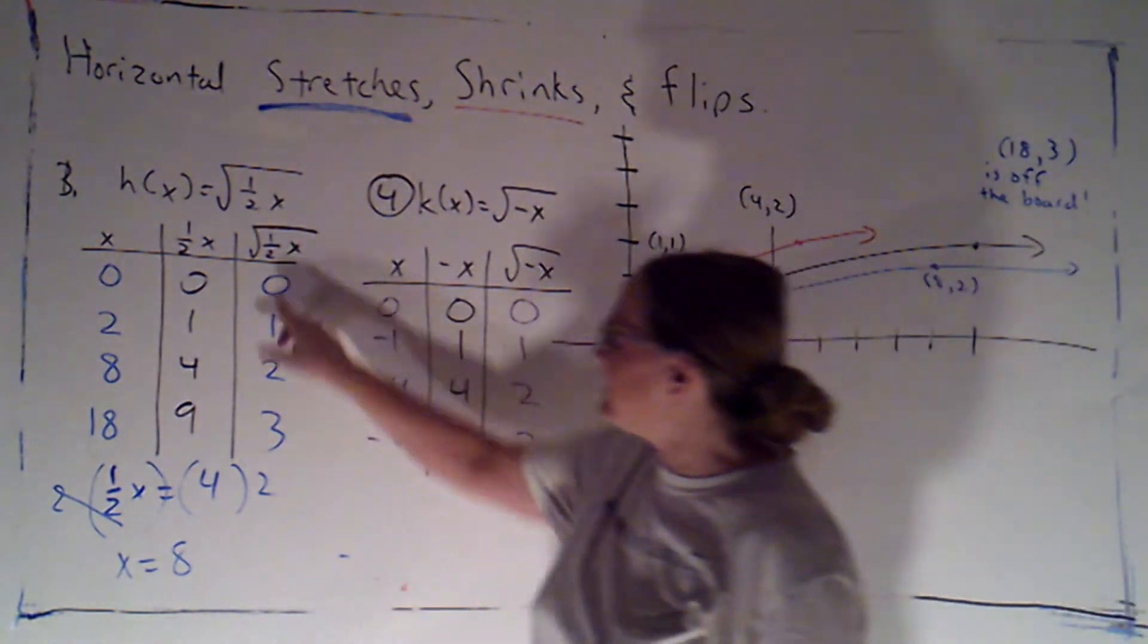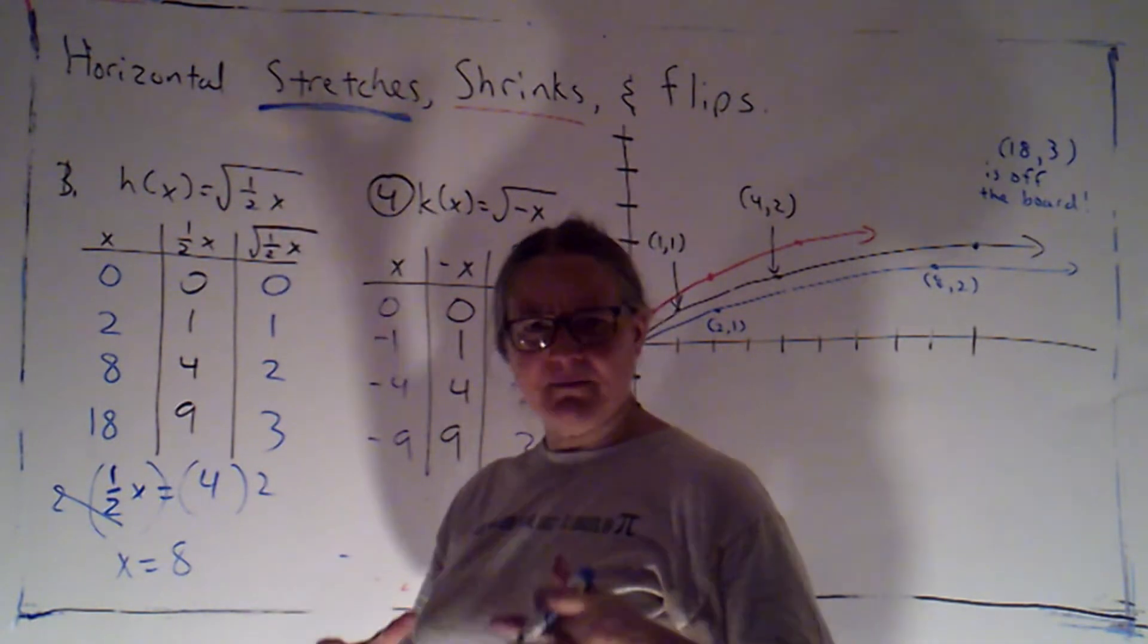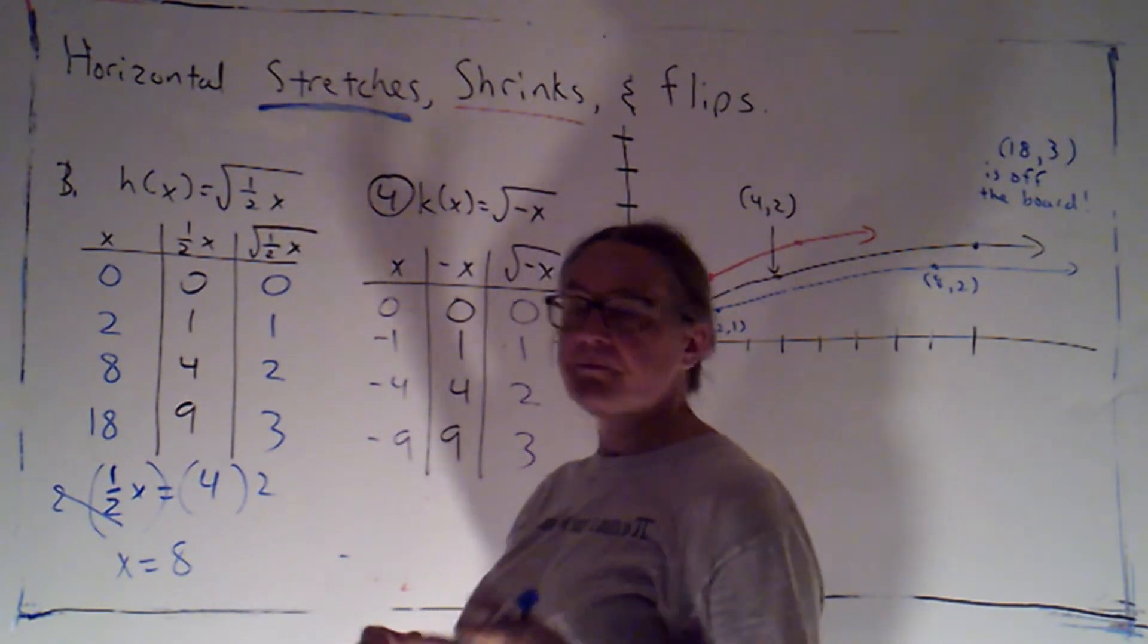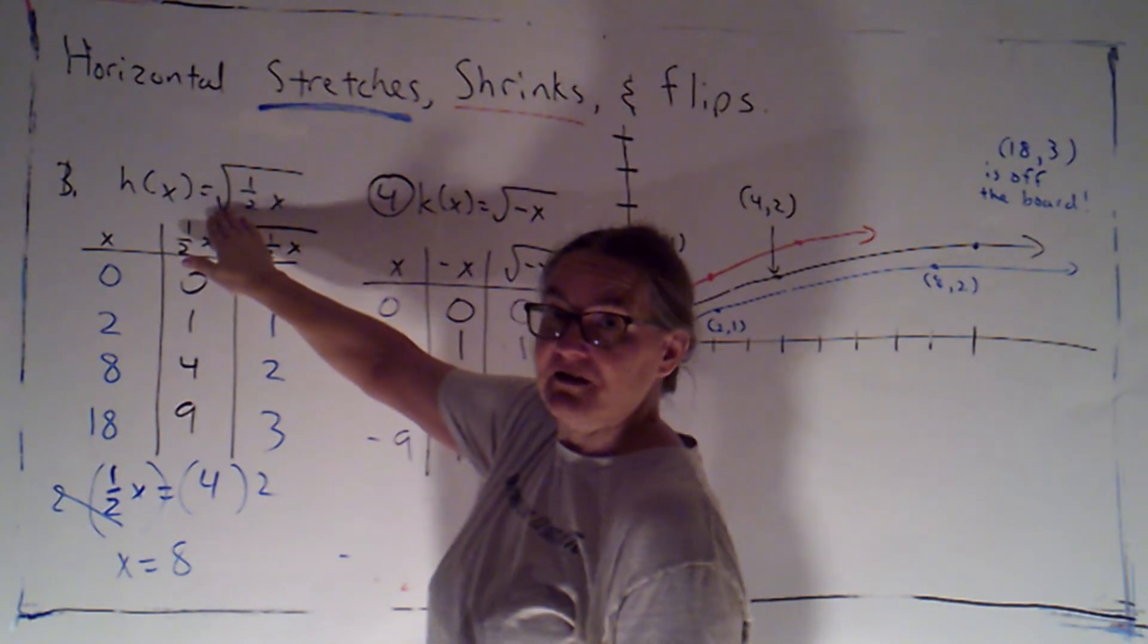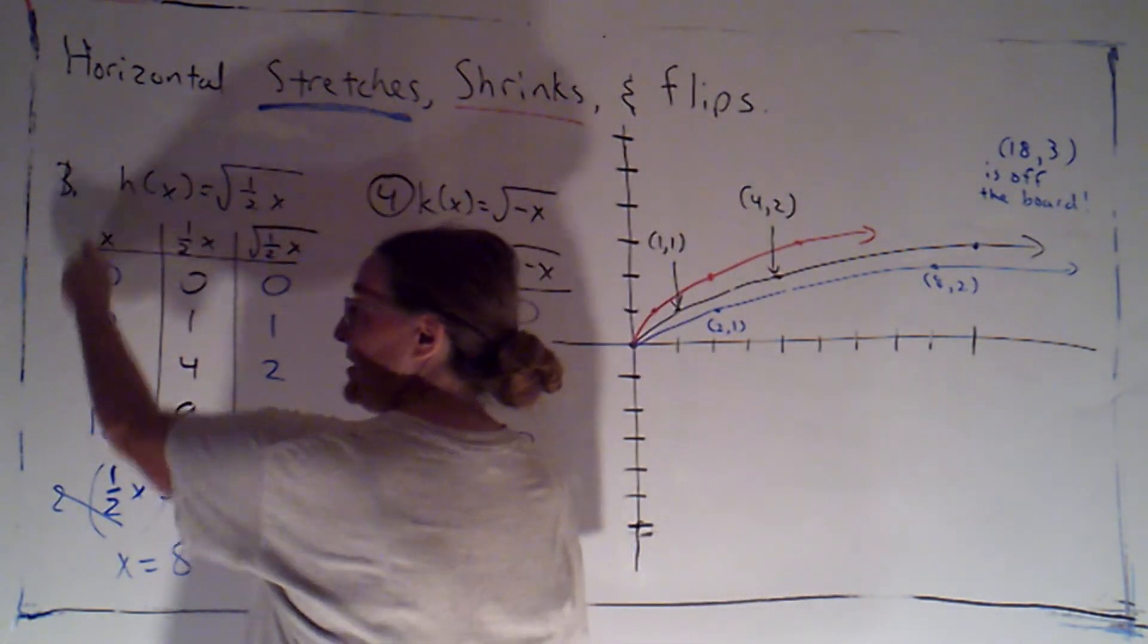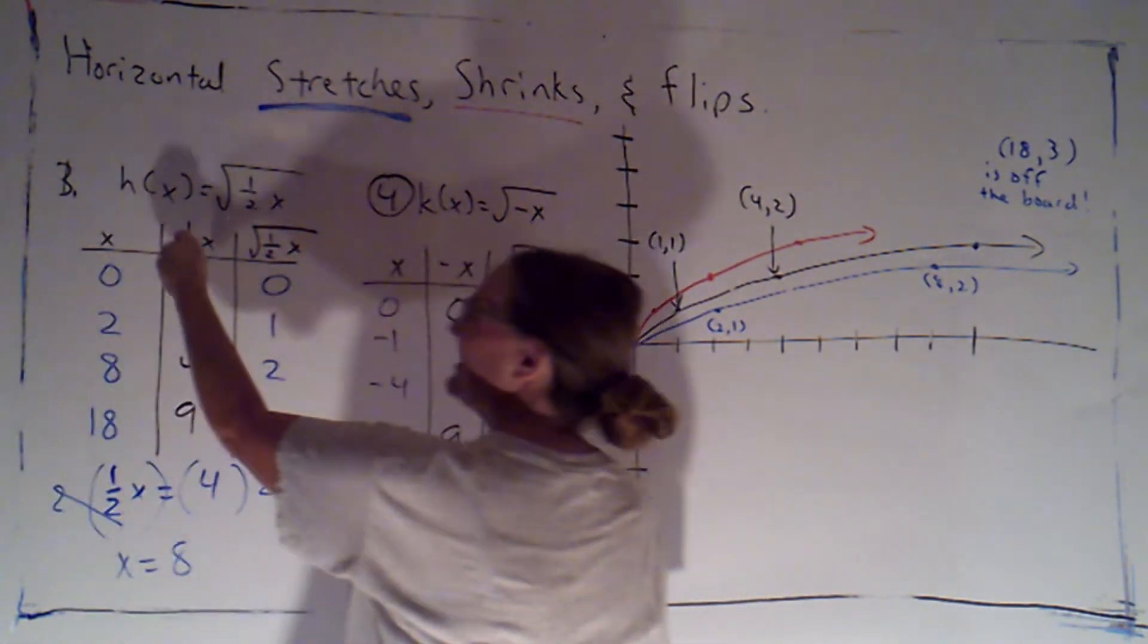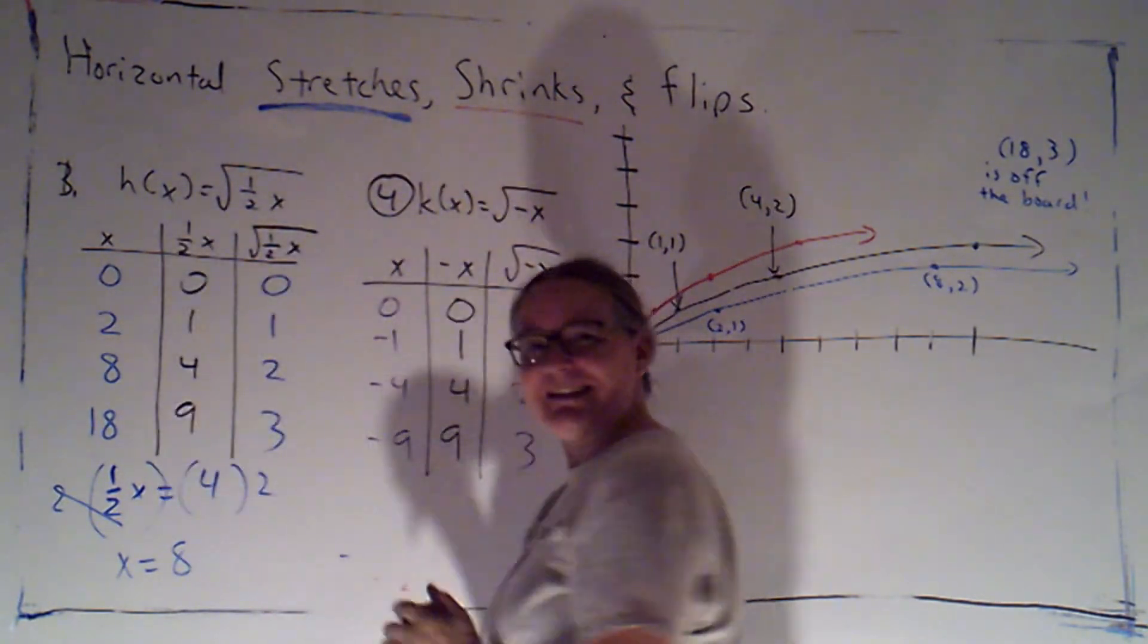Again, a little bit counterintuitive, because I think of multiplying something by 1 half as making it smaller. But if I made x smaller before I plugged in to the square root, then what I started with had to be bigger, so that I could make it smaller and still get these nice numbers.